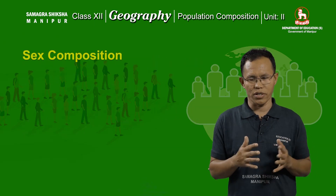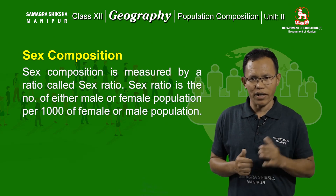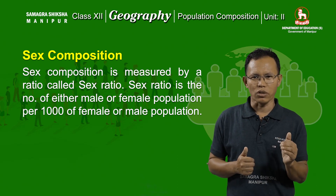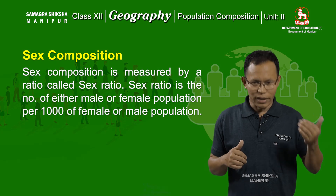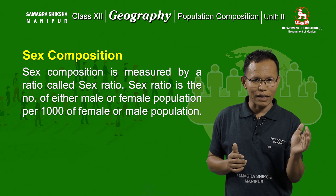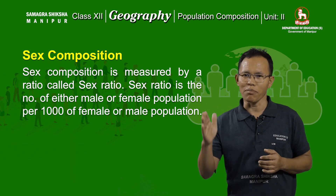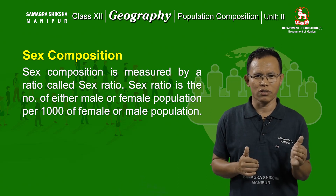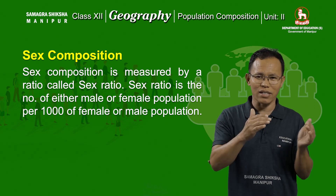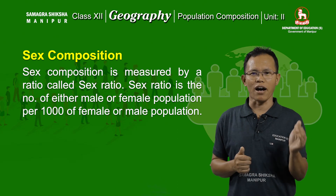Let us take the first composition, that is sex composition. Sex composition of the population may be measured by a ratio, what we call sex ratio. Sex ratio refers to the number of males or females per thousand of the opposite sex. If sex ratio is expressed in terms of male population, measurement is to be made per thousand of female.